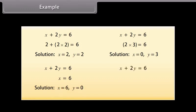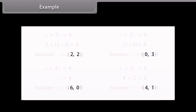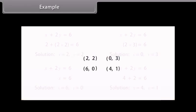For the fourth solution, let us take Y as 1. The equation reduces to X plus 2 is equal to 6, so X is equal to 4. Therefore (4, 1) is also a solution. So the four solutions for the given equation are (2, 2), (0, 3), (6, 0), and (4, 1).